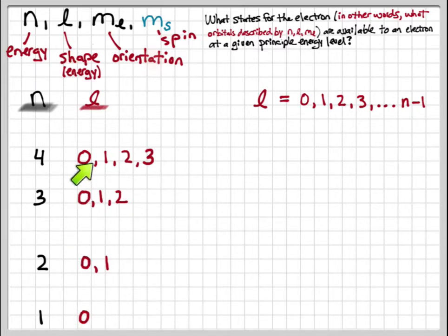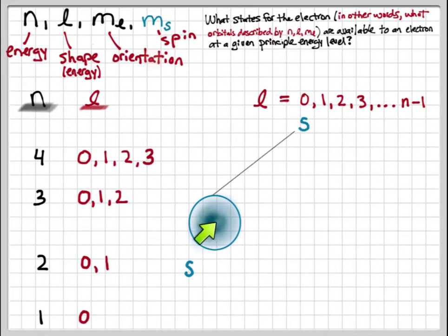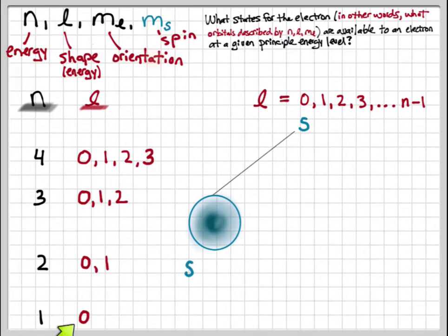The types and shapes of the orbitals increase as we go up in energy level. Chemists give letter codes to signify these various orbital types. When l equals zero, we call that an s orbital, and s orbitals have a spherical shape. I've represented the probability density with shading — darker shading represents higher probability, which decreases as you get further from the nucleus. Each energy level has a spherical s orbital.